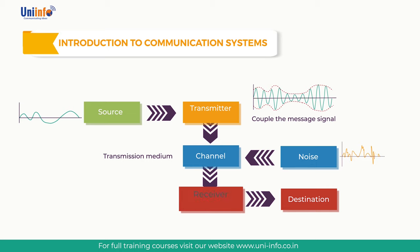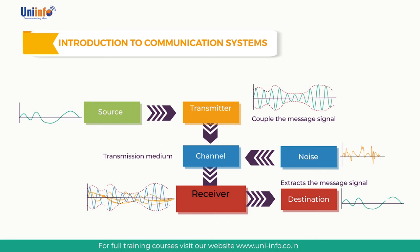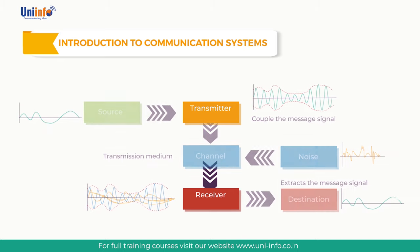The receiver extracts the message signal from the received signal and then converts it to a suitable form for the output transducer. The extraction process usually includes amplification, filtering, and demodulation. The output transducer completes the communication system by converting the electrical signal to the form desired by the user. Examples of output transducers are loudspeakers, meters, television screens, and computer display screens. Other procedures in a basic communication system include modulation and demodulation.